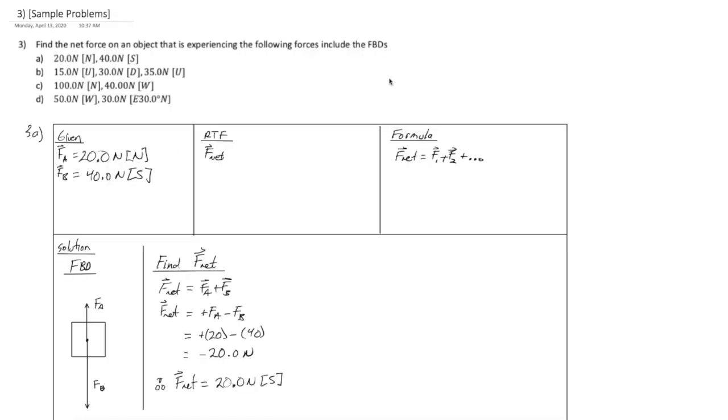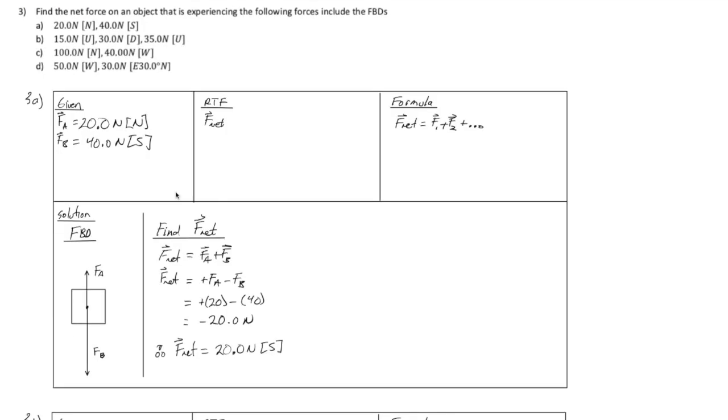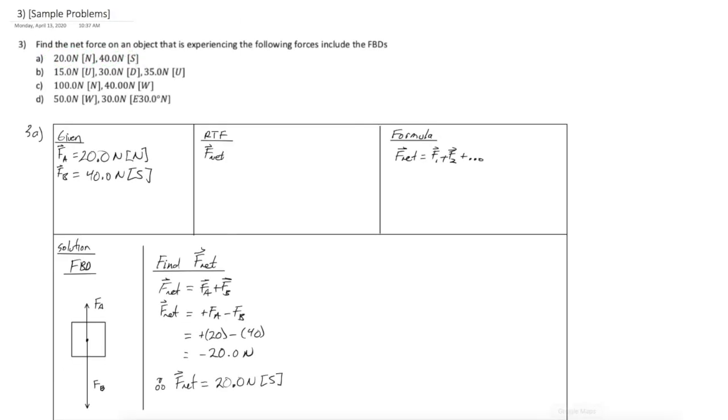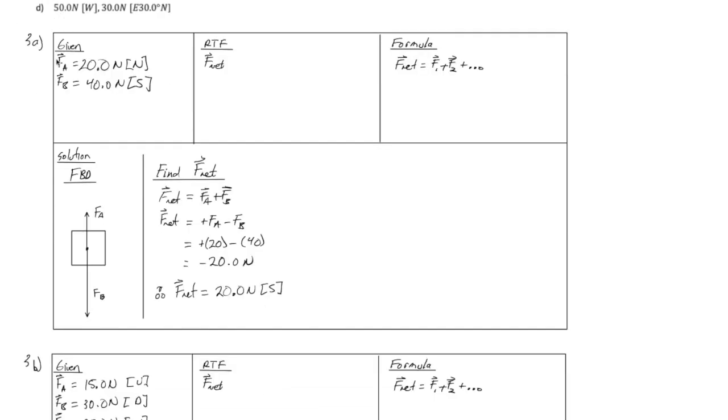Now let's take a look at sample problem number three. In this question, we're asked to find the net force that an object is experiencing based on the following circumstances. You're also required to draw a free body diagram. Again, as best practices, it's good to use GRFS to solve most of your problems. And you should get into the habit of using GRFS even when you're doing your homework. So let's consider part A. So we have our first force, which is 20 newtons north, and our second force, which is 40 newtons south. In both cases, these vectors are collinear, which makes the problem fairly easy to solve.